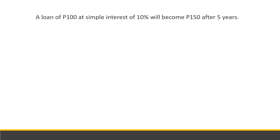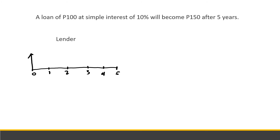Example: A loan of 100 at simple interest of 10% will become 150 after 5 years. From the lender's perspective: the 100 given out is a disbursement (negative cash flow, upward arrow at time 0), and the 150 received back at year 5 is a receipt (positive cash flow, downward arrow at year 5).